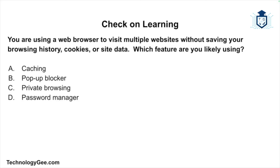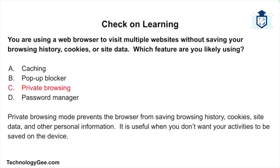Question one: You are using a web browser to visit multiple websites without saving your browsing history, cookies, or site data. Which feature are you likely using? Caching, pop-up blocker, private browsing, or password manager? The correct answer is private browsing. Private browsing mode prevents the browser from saving browsing history, cookies, site data, and other personal information — it is useful when you don't want your activities to be saved on that device.